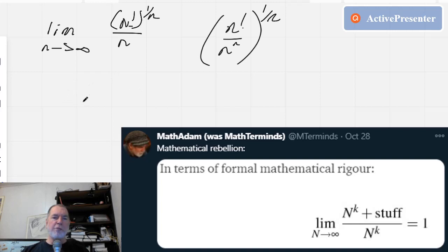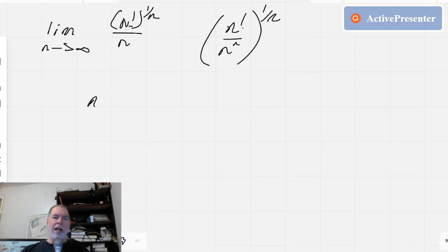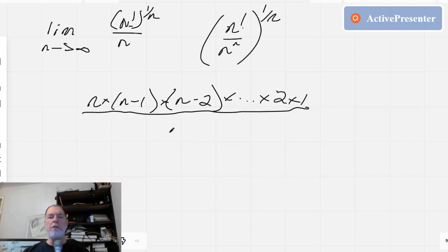So let's see here. We got n times (n minus 1) times (n minus 2), etc., times 2 times 1. Alright, and that's all over n to the n. Now what do we got here?